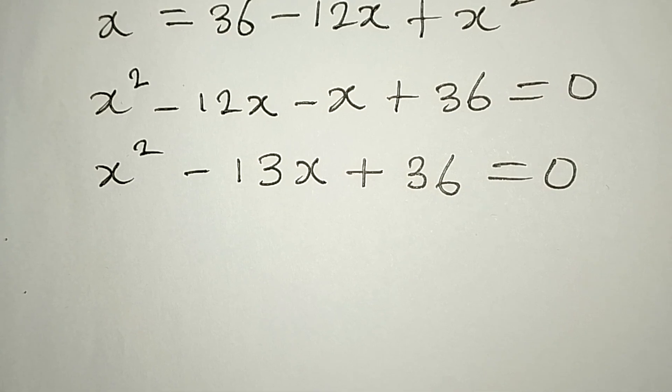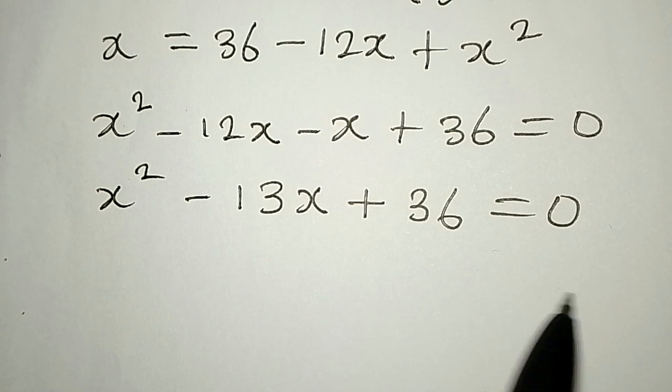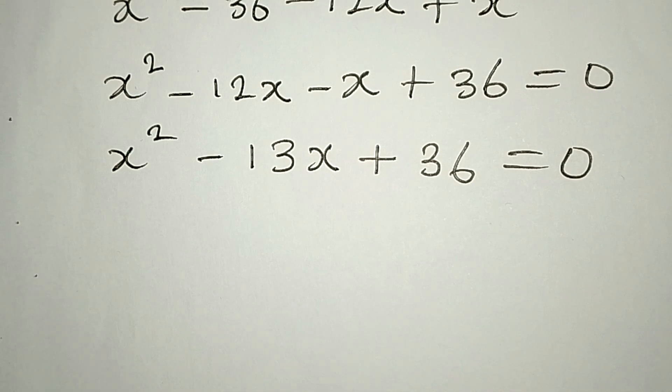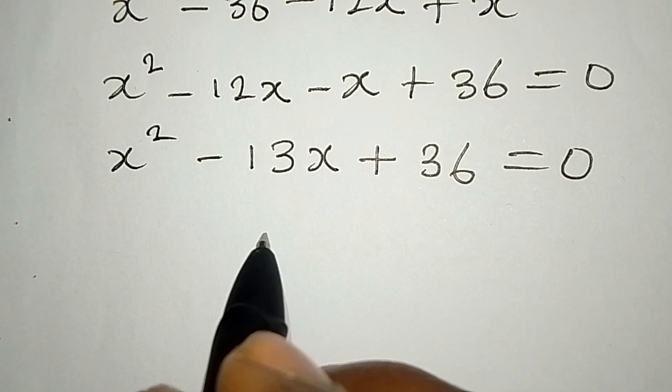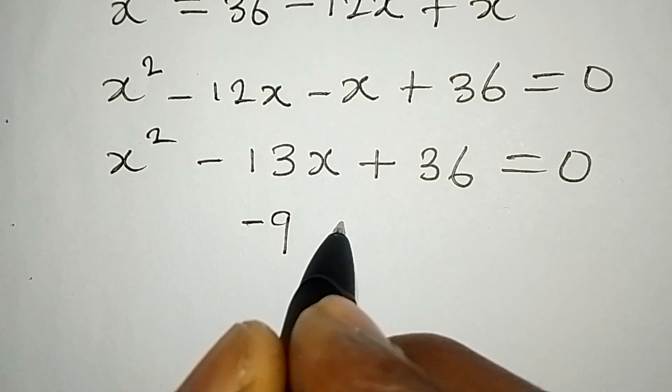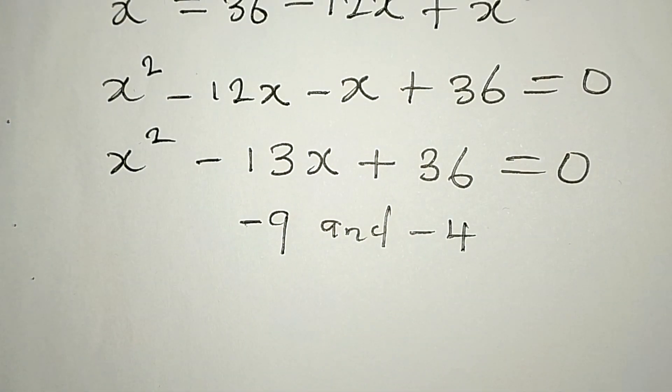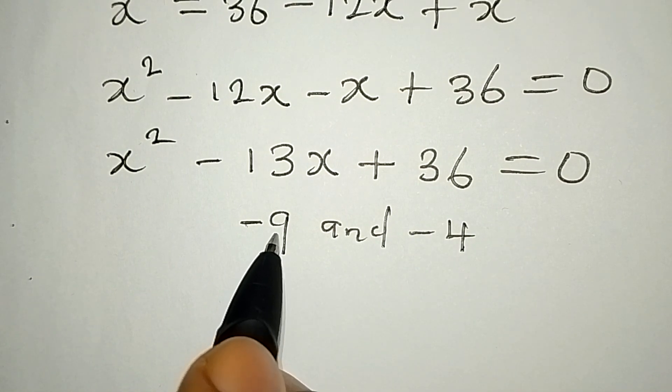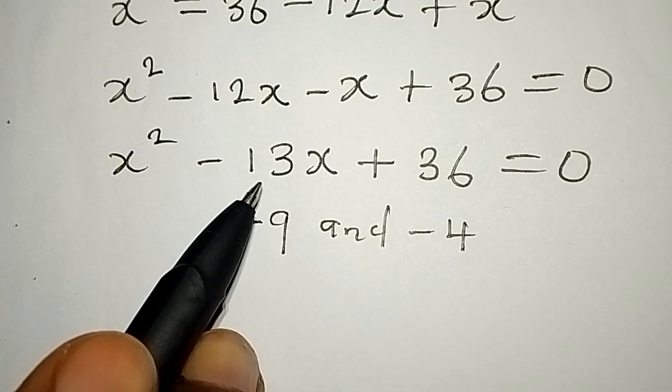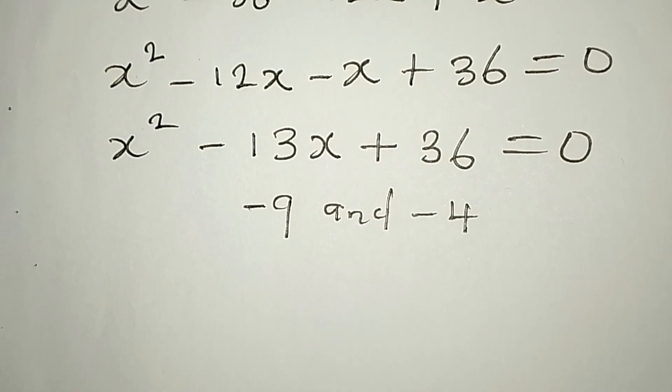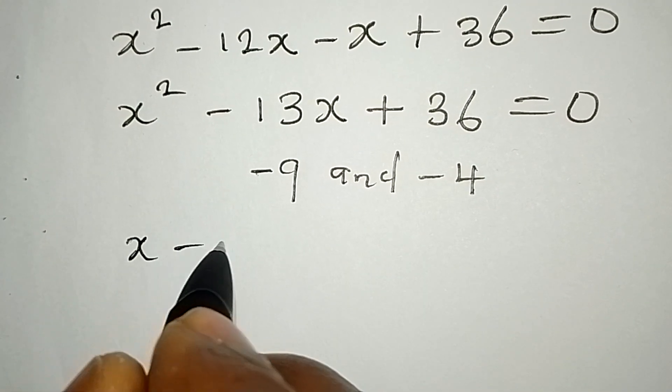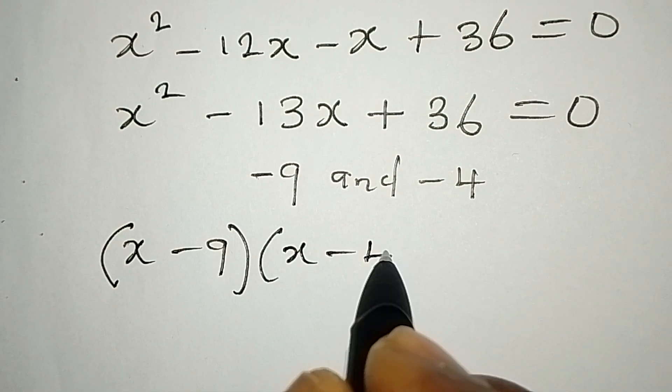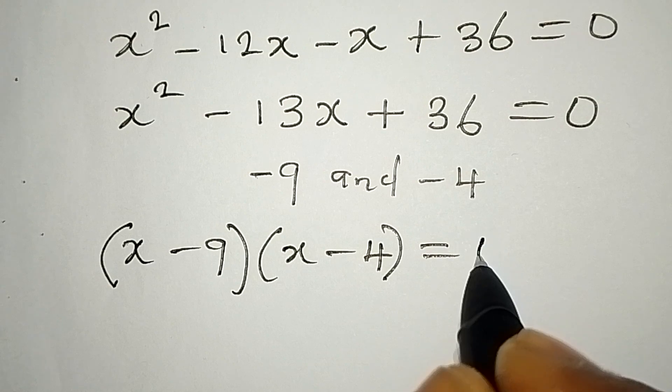Now let's decide the method to use. We can use the formula method for this and we can equally factorize. Because when we use -9 and -4, we can factorize since -9 times -4 gives us +36, and -9 minus 4 gives us -13. So we get (x - 9)(x - 4) = 0.